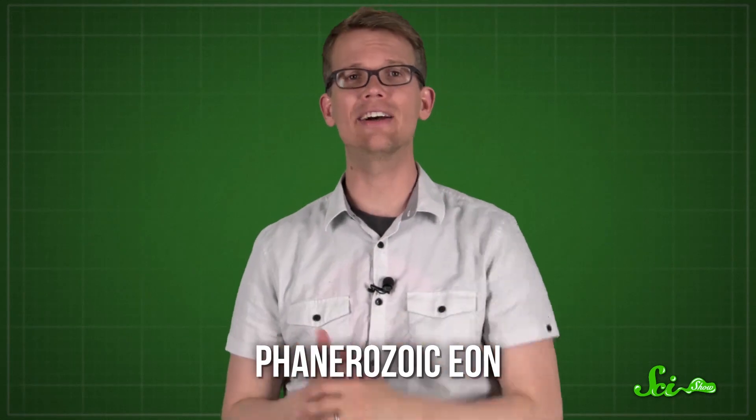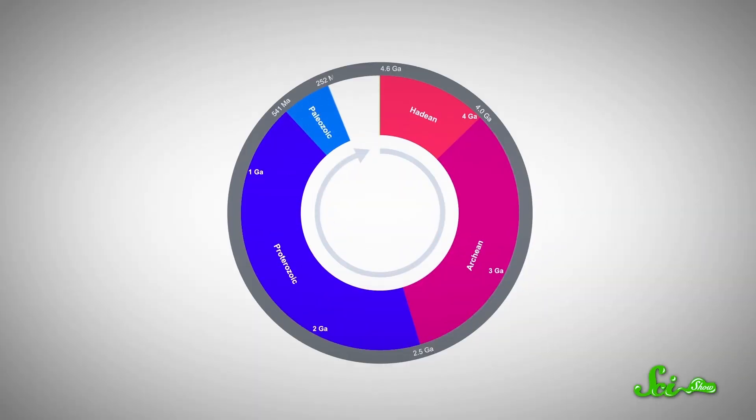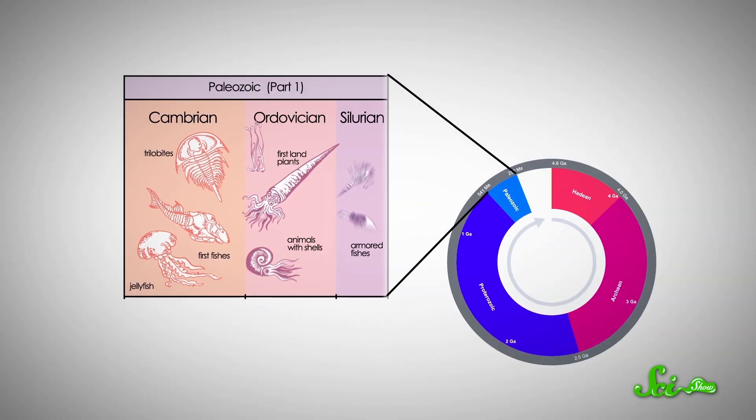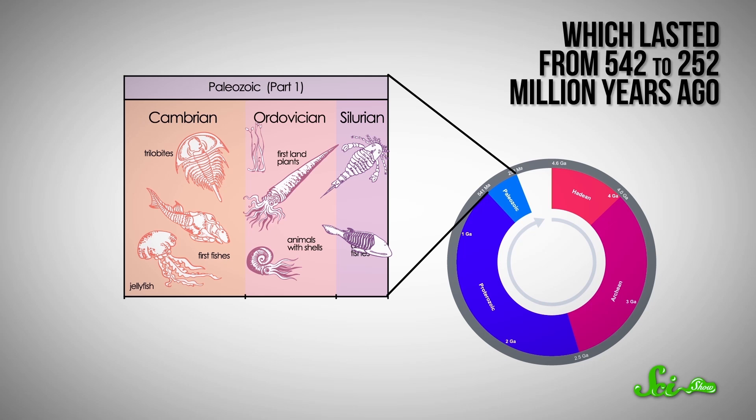Next comes the Phanerozoic eon, and here we're going to zoom in a bit to the first chunk of the Phanerozoic eon, the Paleozoic era, which lasted from 542 to 252 million years ago. Right at the beginning of the Paleozoic, there was a huge explosion of more complex life. And that's when things really started to get interesting.